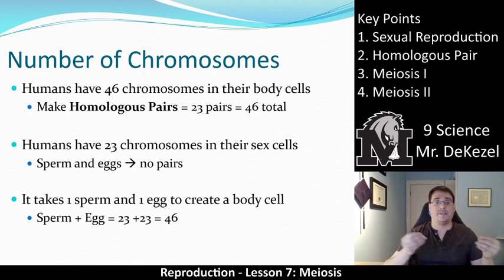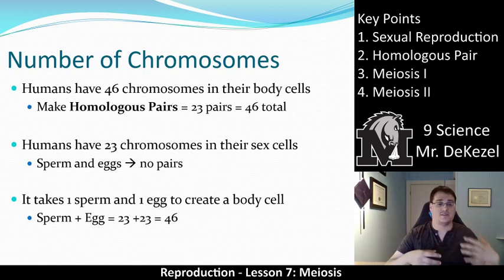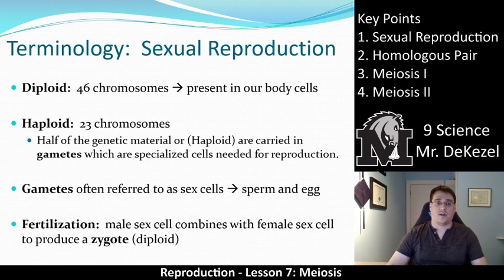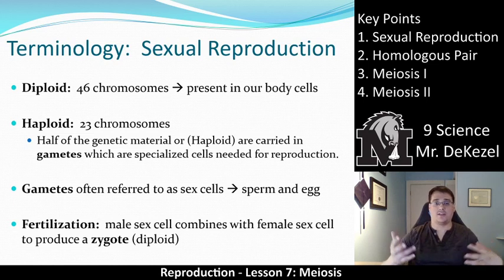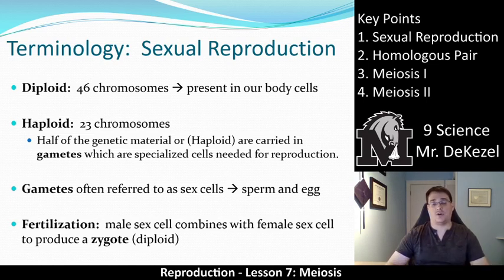But how do we get the sperm and egg cell? That is the real question of today. Diploid is 46 chromosomes — that's all of our body cells, two sets of 23 chromosomes. And haploid is 23 chromosomes, or half the genetic material, carried in gametes. Gametes are sex cells, which are sperm and egg. So when I talk about gametes, I'm talking about sperm and egg in general.